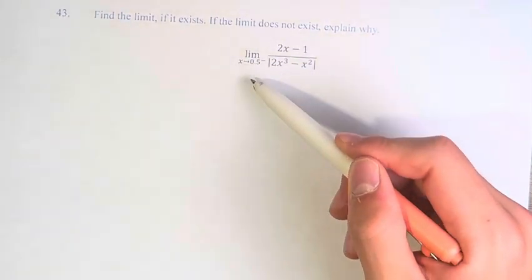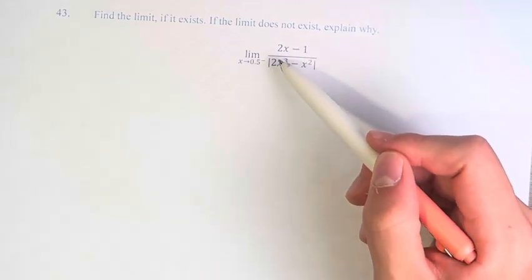The limit as x approaches 0.5 from the left of 2x minus 1 over the absolute value of 2x cubed minus x squared.